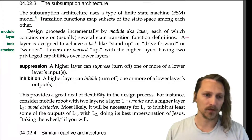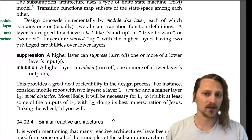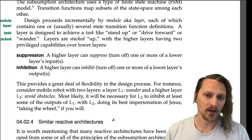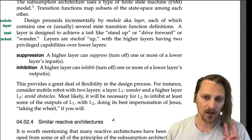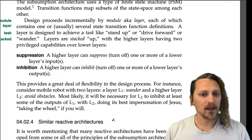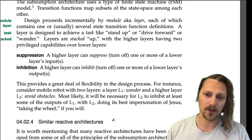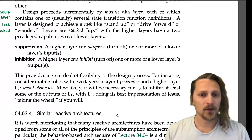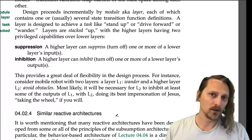This provides a great deal of flexibility in the design process. For instance, consider a mobile robot with two layers: L1 — wander, and a higher layer L2 — avoid obstacles. Most likely, it will be necessary for L2 to inhibit at least some of the outputs of L1, with L2 taking the wheel.